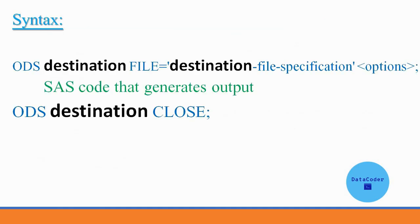So this is the syntax. First we need to start the ODS statement by writing ODS, then the file destination, and the location where we want to save the file. We need to close the ODS by writing the ODS destination and CLOSE. In between the ODS statements we write our SAS code. In the ODS destination we can create different format reports — HTML, RTF, or PDF. The SAS code in between can include procedures like PROC PRINT, PROC FREQ, or PROC MEANS.